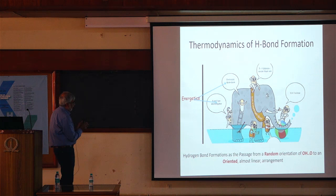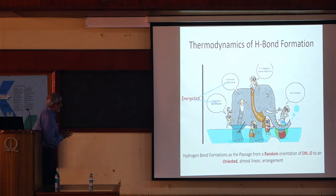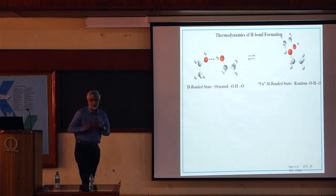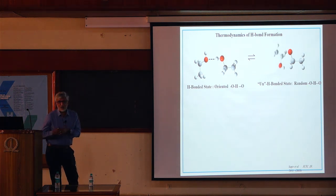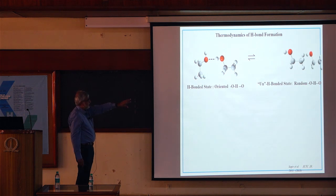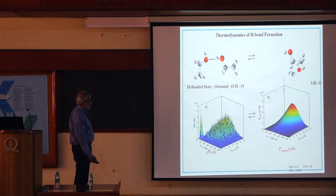The starting point of our calculations is that hydrogen bond formation is considered as the passage from a random orientation of the O–H–O to an oriented, almost linear arrangement. Essentially, the unhydrogen-bonded state has random O–H–O angles, while the hydrogen-bonded state is the oriented state. We consider this as an equilibrium reaction.